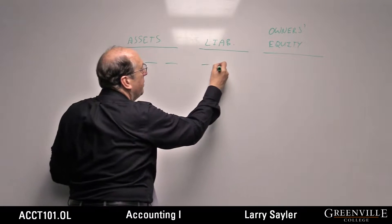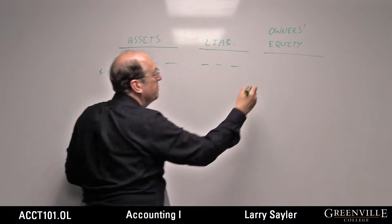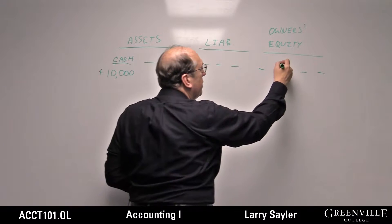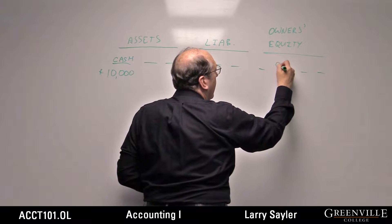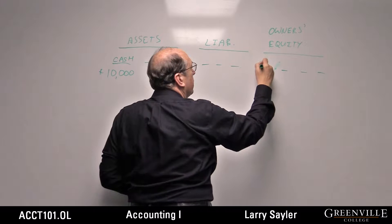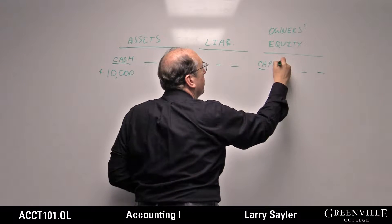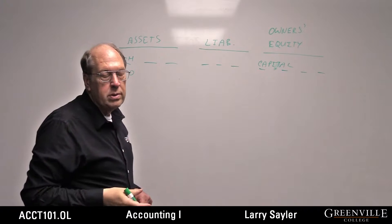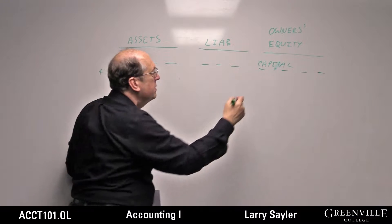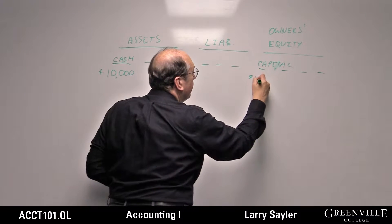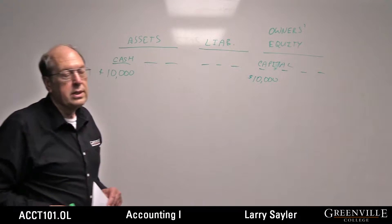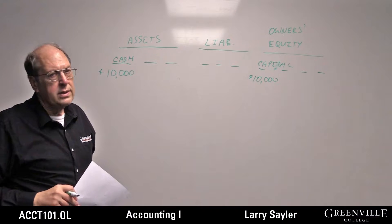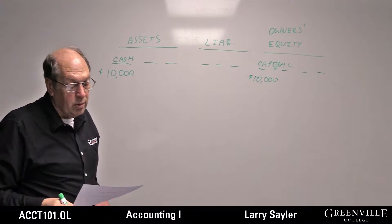There'd be some liability accounts and some owner's equity accounts — this is just like an example in the book. One of the owner's equity accounts would be capital; usually it's the first one. When the owner contributes $10,000, the value of the business has gone up $10,000, so capital increases by $10,000. That was the thrust of chapter one.